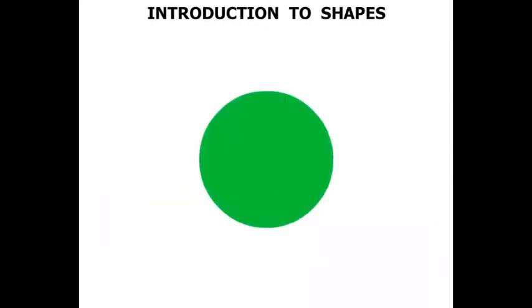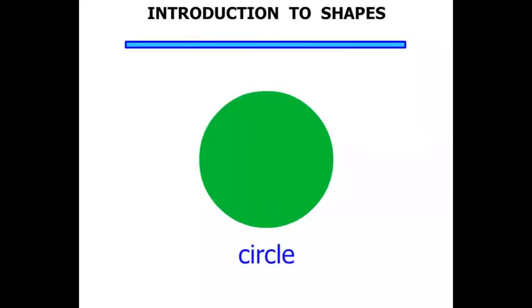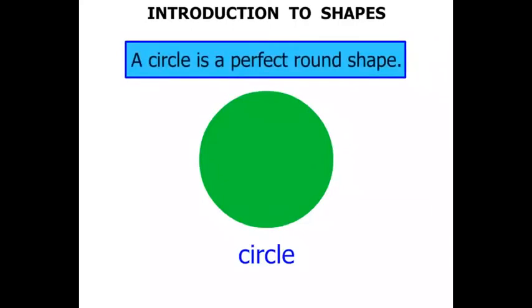What about this shape? Well this is a circle. A circle is a perfect round shape. So there we have it, a circle.